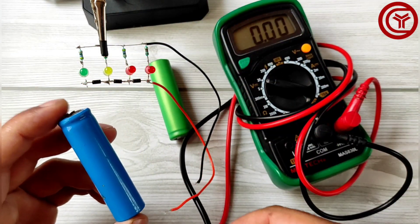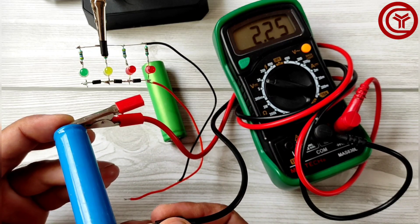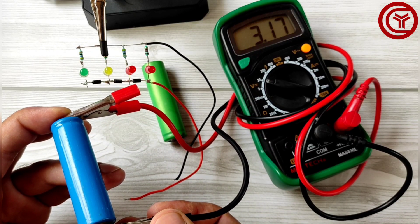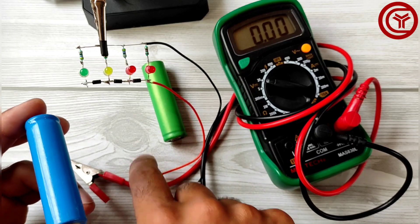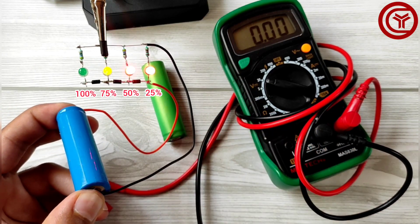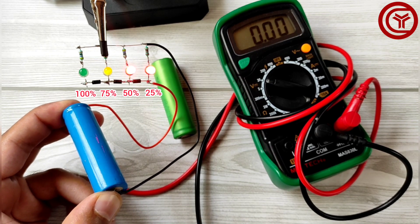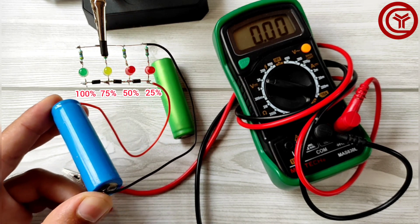Now let's check another battery. It is charged to 3.17 volts. Now connect with circuit. Only two LEDs and third LED is glowing dim, means it's about 60 to 65% charged.